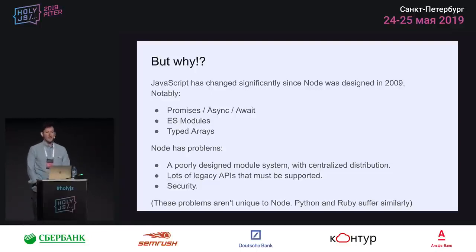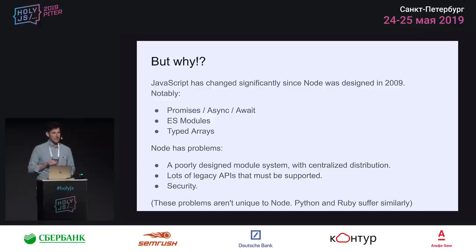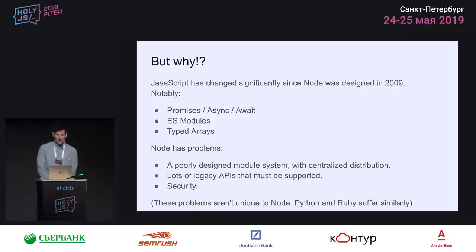The main question is: why would you do this? What's the point? Isn't this disrupting the community, bifurcating the module systems? Nothing good can come from this. Isn't this a Python 3 situation where we end up with ten years of difficulty with two different forks of the language? I think those are good concerns, but I think it's time to reevaluate JavaScript and Node. In particular, JavaScript has changed quite a bit in the last ten years since I originally sat down to do Node.